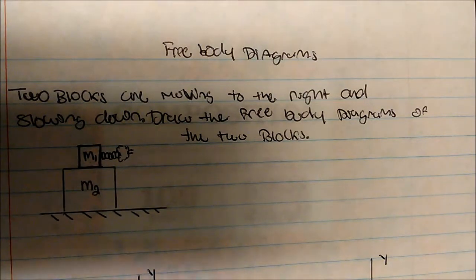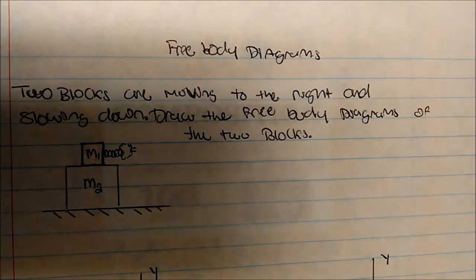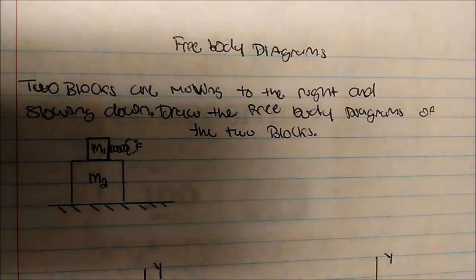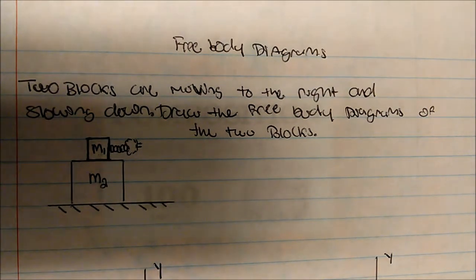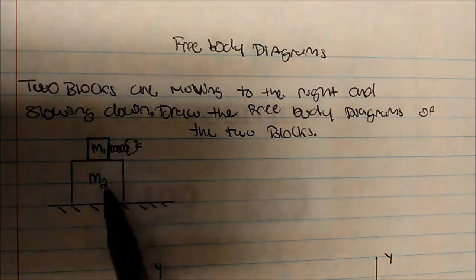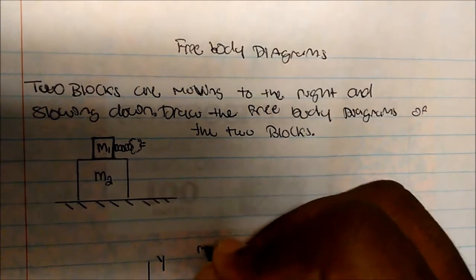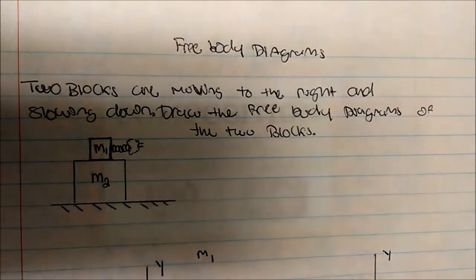In this video, we're looking at drawing free-body diagrams — specifically two blocks with one on top of the other. The blocks are moving to the right and slowing down. We'll call the top block mass 1 and the bottom block mass 2. Let's look at the free-body diagram for mass 1 first.